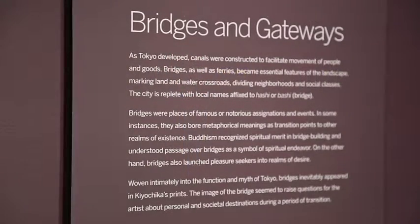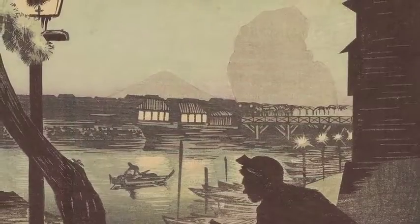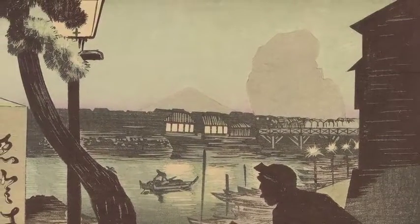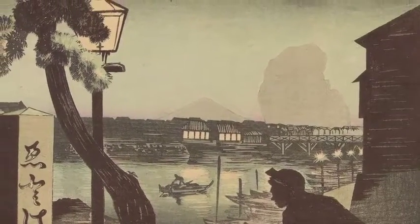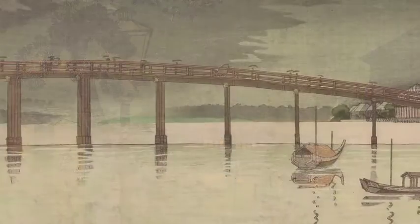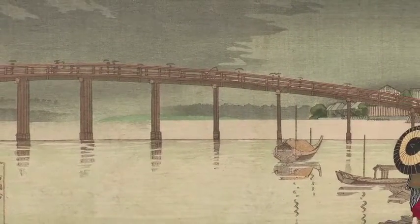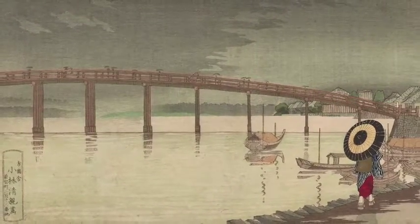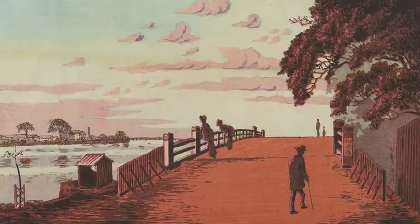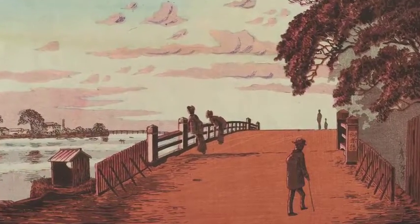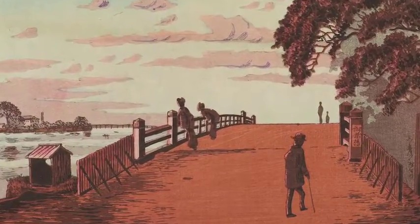We move beyond that to a separate section on bridges. The city of Edo, and later Tokyo, was a metropolis constructed on nearly 800 hills and hillocks with streams, rivulets, and rivers running in between. It was an uneven city, not the regal capital that typified so many other great cities in East Asia. Bridges become very important, and so we turn to bridges in one section.